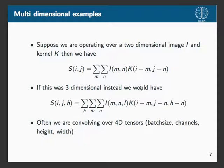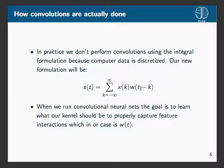Even though we write the sum from negative infinity to infinity, if we're convolving over an image of some fixed size, anything that exceeds the region of our image goes to zero. So it's not actually an infinite sum — we can make it fit within the region we're working with, making it easier to calculate.